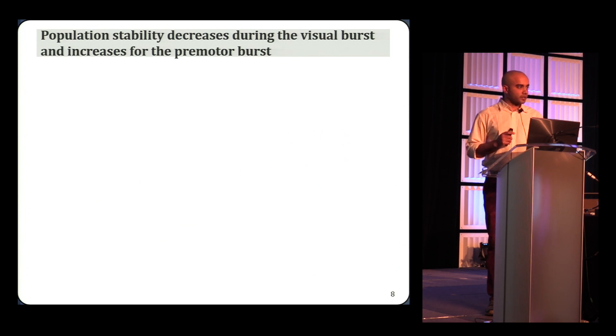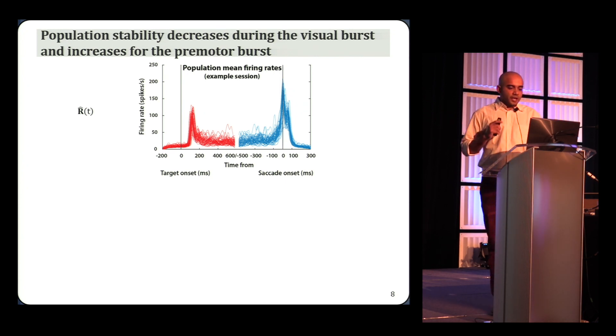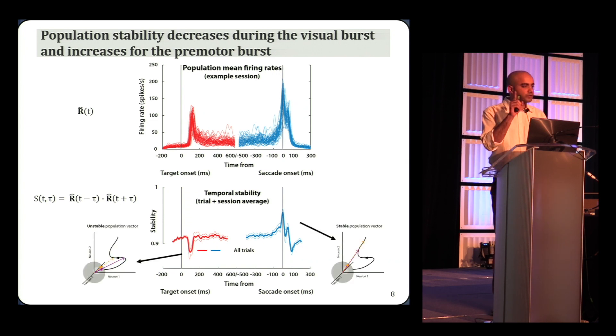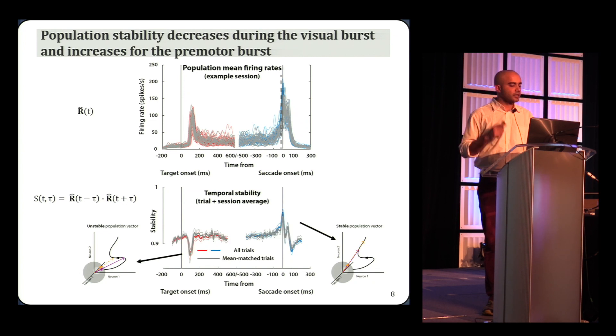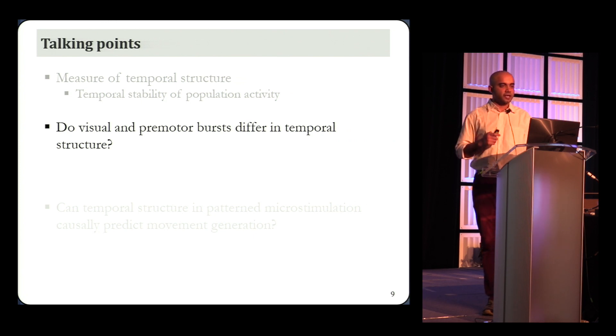Okay, so we used this and applied this to our population recordings. And just to orient you, this is the average population firing rate for a few example trials aligned to the visual burst and the target onset and the movement from one session. If you compute this dot product on individual trials, on each of these trials and average across trials and sessions, you see that the temporal stability decreases sharply when the target comes on and goes the other way closer to one during the movement or just before the movement. So this normalized activity vector is wiggling around during baseline, starts wiggling a lot more when the visual input comes in and becomes really stable just before the movement. So just to confirm that the firing rate did not influence this result, we saw the same pattern when we looked at just the trials where the visual and motor bursts were matched in magnitude. Okay, so we asked whether the visual and pre-motor bursts have different temporal dynamics, and I showed you that the temporal stability decreases during the visual burst and increases during the movement.